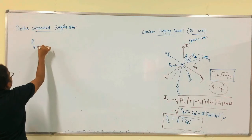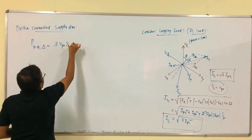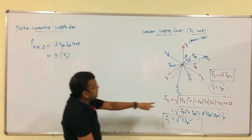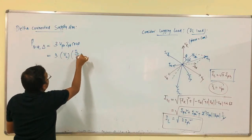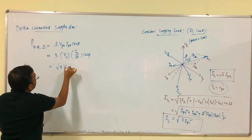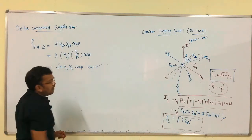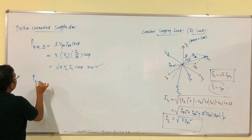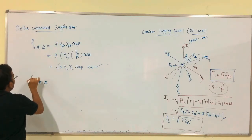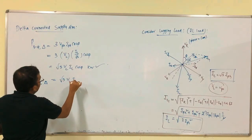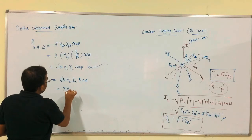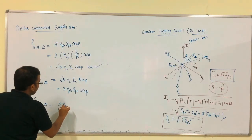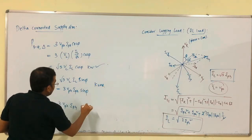Active power P = 3 × V_phase × I_phase × cosφ. Substituting V_phase = V_L and I_phase = I_L / √3, this gives P = √3 × V_L × I_L × cosφ (kilowatts). Reactive power Q = √3 × V_L × I_L × sinφ = 3 × V_phase × I_phase × sinφ (kVAR). Apparent power S = 3 × V_L × I_phase (kVA).